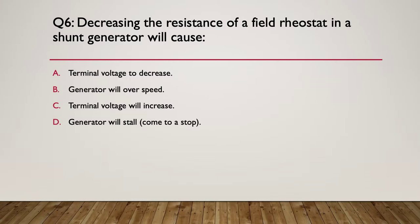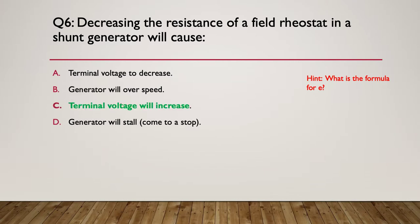Question six: decreasing the resistance of a field rheostat in a shunt generator will cause what? A: terminal voltage to decrease; B: the generator will overspeed; C: terminal voltage will increase; or D: the generator will stall. The answer is C — terminal voltage will increase. Decreasing the resistance of the rheostat means more current flows through the field winding, putting more flux across the generator, which increases the voltage at the terminals.